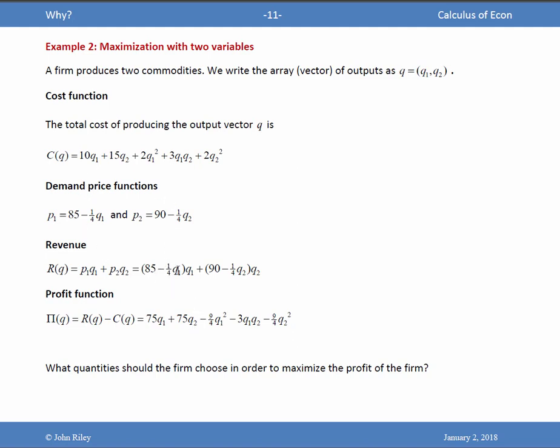The revenue is 85Q1 here. We've got a cost, a linear cost of 10Q1. So there's the 75Q1. We've got a cost of 3Q1Q2. That's the only place this cross-multiplied term appears. So there's a minus 3Q1Q2. We've got a revenue is minus a quarter Q2 squared here. And the cost is 2Q2 squared. So adding those together, we've got this term. So this looks as though it's probably right. And it is. So what quantity should the firm choose in order to maximize the profit of the firm?